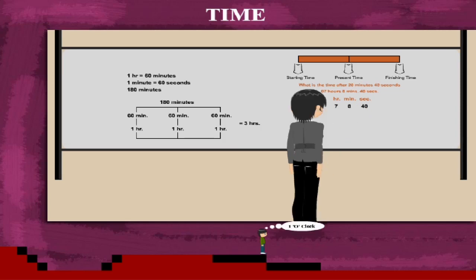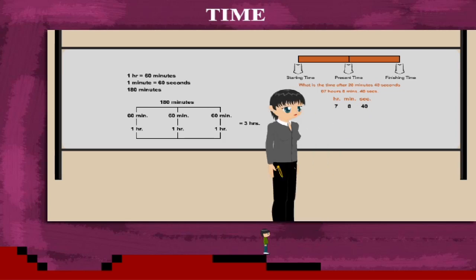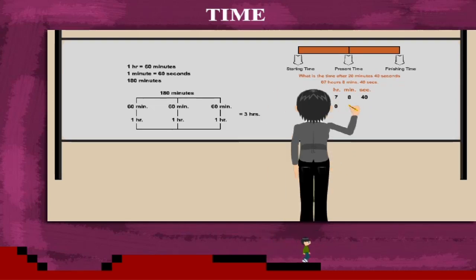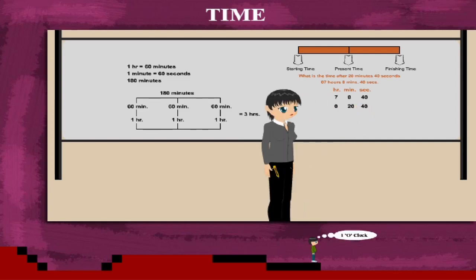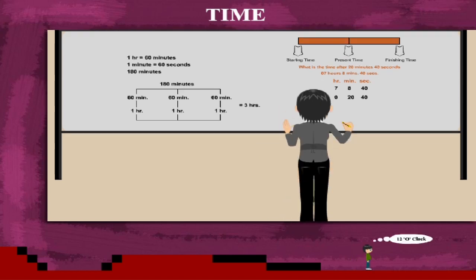So, she adds 20 minutes and 40 seconds to 7 hours 8 minutes 40 seconds. Adding the seconds gives 80. 60 seconds make a minute.